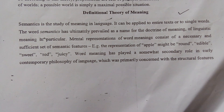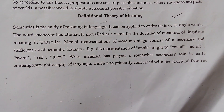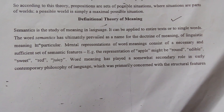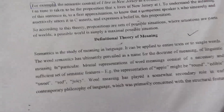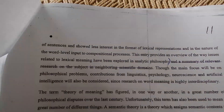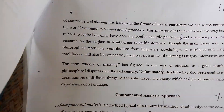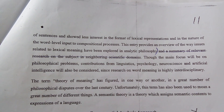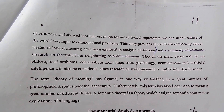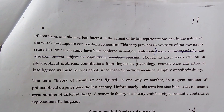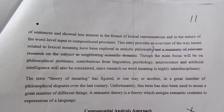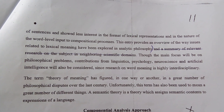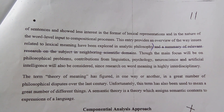Word meaning has played a somewhat secondary role in early contemporary philosophy of language, which was primarily concerned with the structural features of sentences and showed less interest in the format of lexical representation and in the nature of word-level input to compositional processes. This entry provides an overview of the way issues related to lexical meaning have been explored in analytic philosophy.